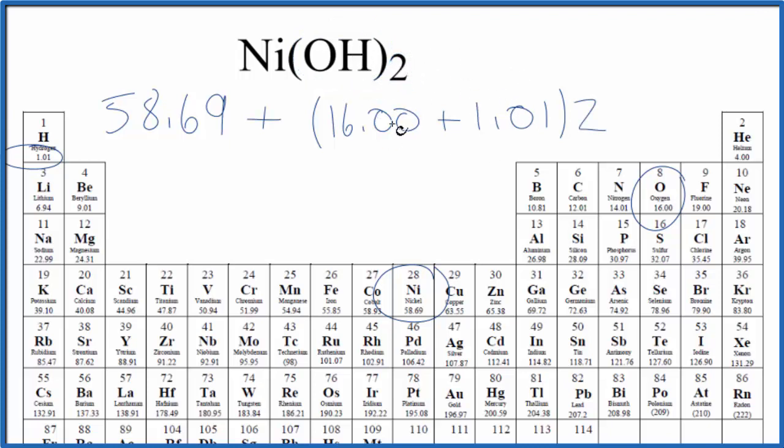Now we'll add these two numbers together, multiply by 2, add it to our 58.69, and we find that the molar mass for NiOH2, nickel-2-hydroxide, is 92.71 grams per mole.